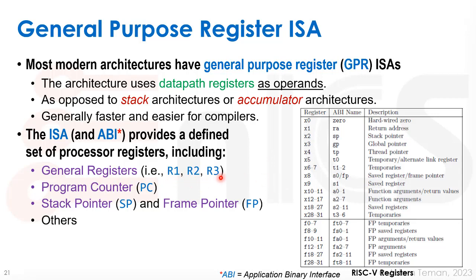General registers R1, R2, R3 can be used for almost anything. Almost all ISAs have a special register called the program counter, which points to where the next instruction is. We also have things like the stack pointer and frame pointer, as well as other registers defined by the RISC-V ABI.